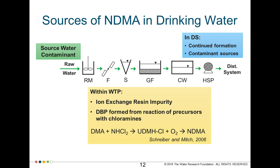NDMA was first discovered in drinking water in 1989 in Ontario, Canada. There are a number of potential sources of NDMA in drinking water. Some plumes of NDMA contamination come from liquid rocket fuel production, so it can occur as a source water contaminant. Research has shown that ion exchange resins can leach NDMA and other nitrosamines. The primary formation mechanism for NDMA in drinking water is from reaction of precursors with chloramines. Schreiber and Mitch in 2006 postulated that dichloramine in particular was important for this reaction. Precursors can be watershed-derived from agricultural or wastewater discharges, or polymer-derived — polydadmac and polyamine-based polymers have been found to react with chloramines to form NDMA.